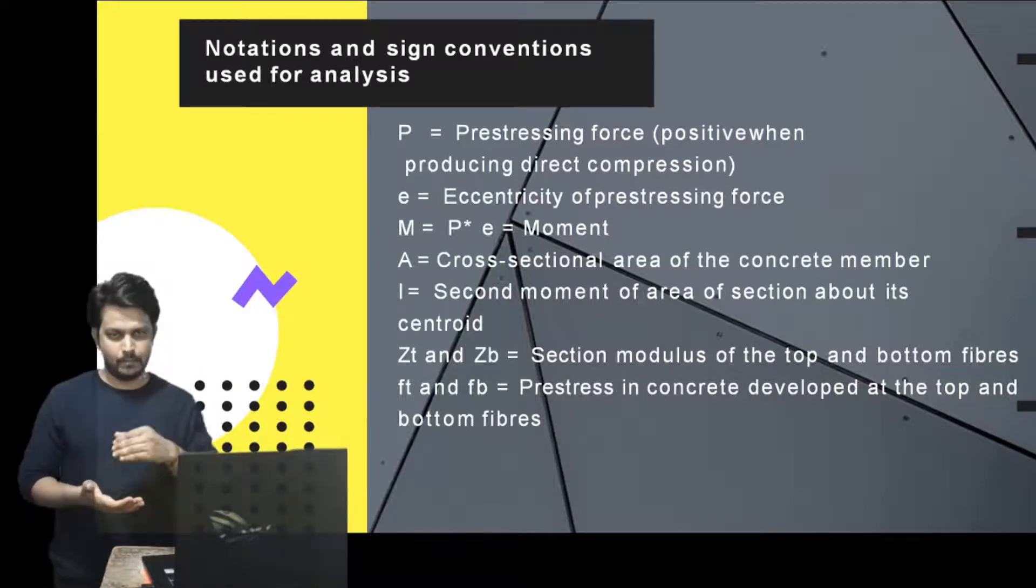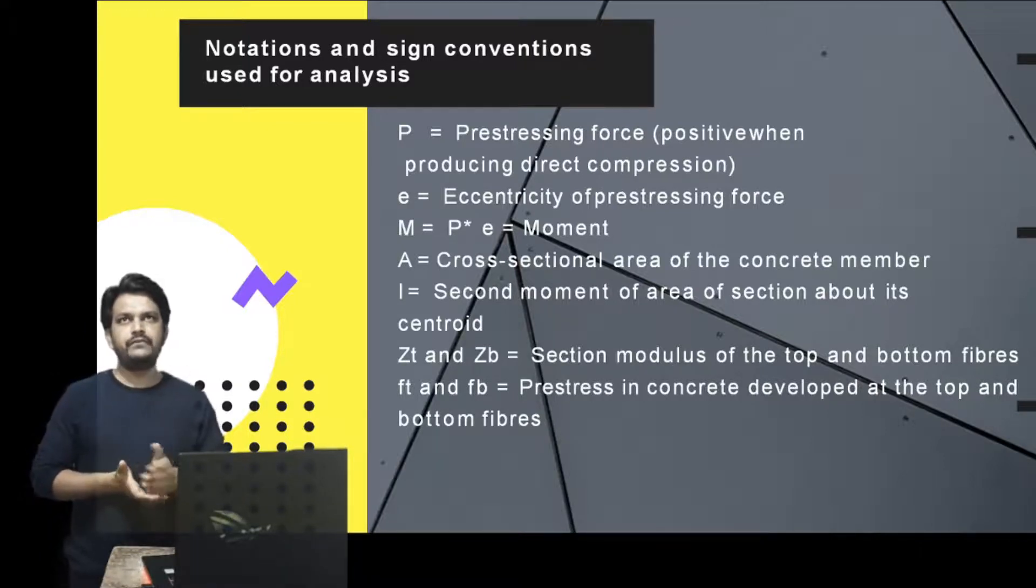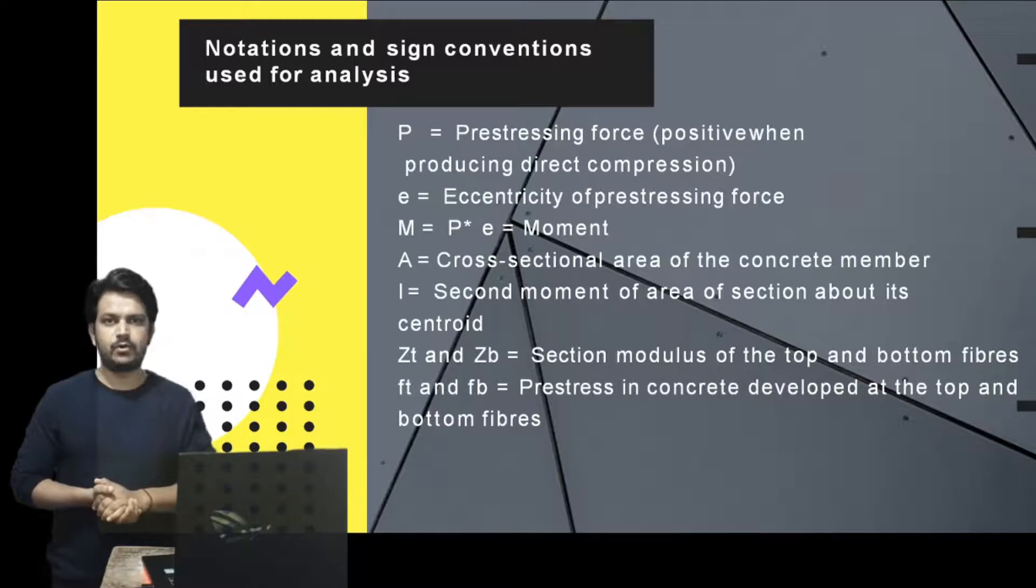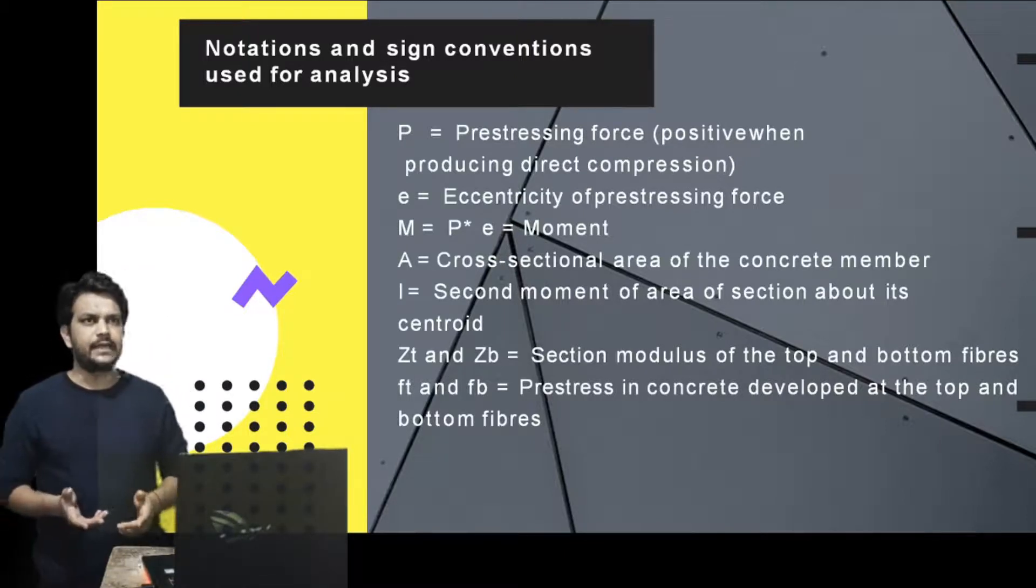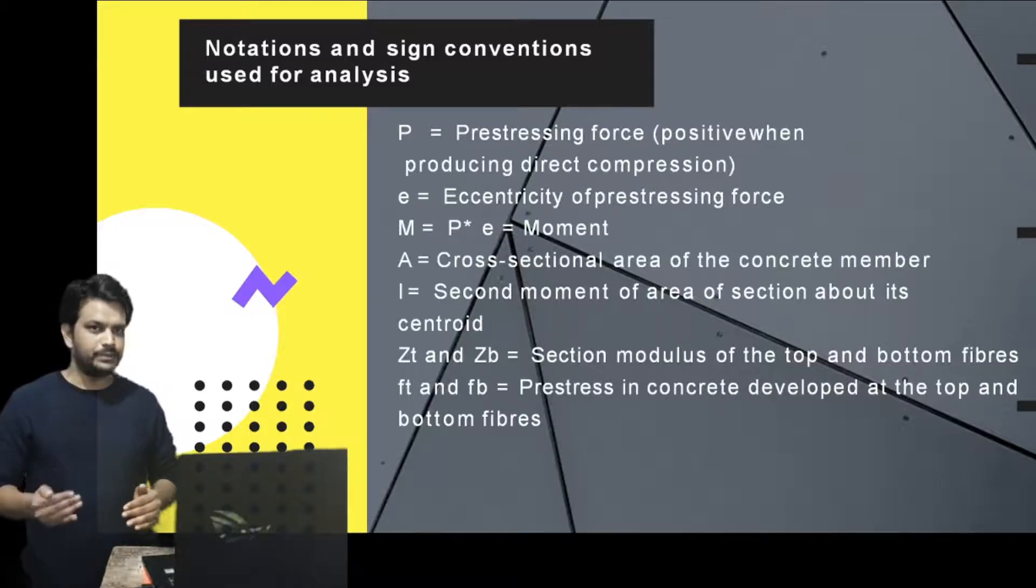Section modulus of the cross-section above the neutral axis and below the neutral axis. For a rectangular cross-section B by D, ZT and ZB will have the same value because the neutral axis lies at the middle of the depth.